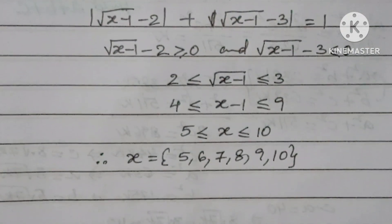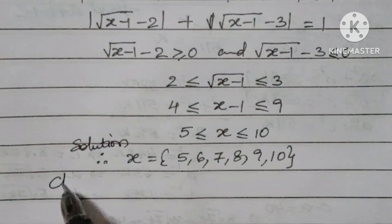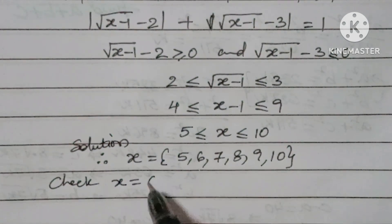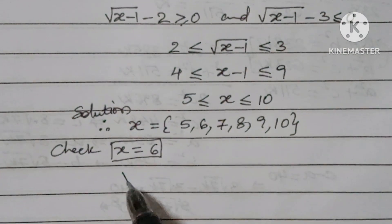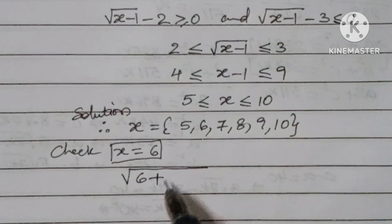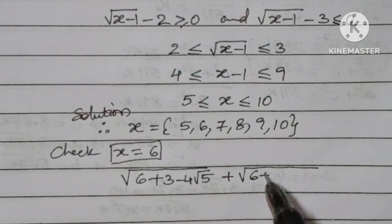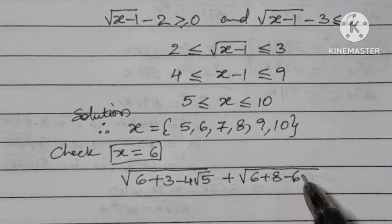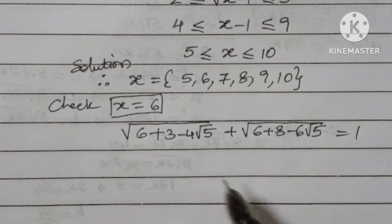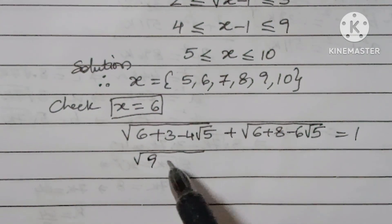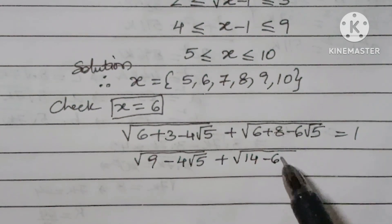We can verify by checking x = 6. Substituting x = 6: square root of (6 + 3 - 4√5) plus square root of (6 + 8 - 6√5) should equal 1. This simplifies to square root of (9 - 4√5) plus square root of (14 - 6√5), which can be rewritten as square root of (9 - 2√20) plus square root of (14 - 2√45).